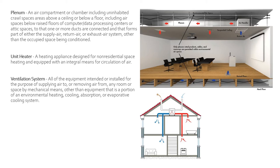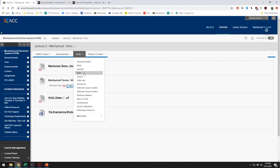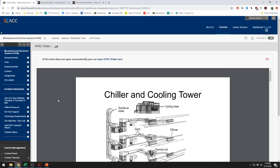Next we have a unit heater. This is a heating appliance designed for non-residential space heating and equipped with an integral means of circulation of air. Unit heaters are used for unoccupied spaces such as stairwells, mechanical rooms, and fire riser rooms — basically when equipment needs to not freeze but doesn't need to be kept at 72 degrees. Essentially it's almost like an emergency heater. Next is ventilation systems — all the equipment intended or installed for the purpose of supplying air to or removing air from any room or space by mechanical means, other than equipment that is a portion of an environmental heating, cooling, absorption, or evaporative cooling system. That covers all of the terms from the Uniform Mechanical Code, and we will now go to the HVAC slides and talk about some of the different cooling systems.